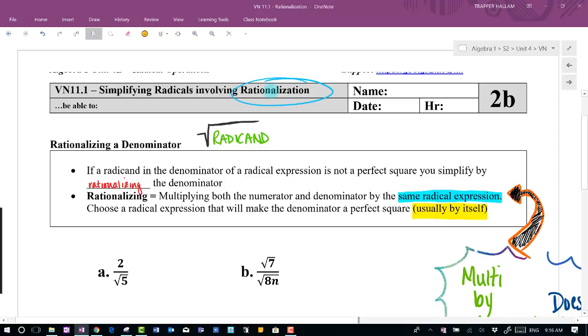So rationalization is what we saw in the example videos for the last video on 11.1 where we were dealing with division in radicals. We had a radical in the denominator and we said that's not okay. We need a way to take care of that, and that's what rationalization gives us.